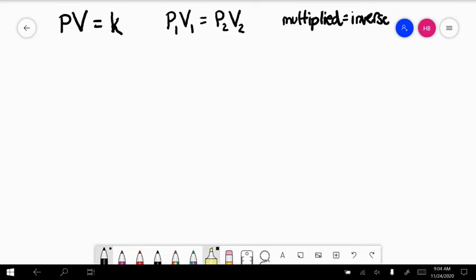That means that when you have a formula where they are multiplied by each other, as one goes up, the other one will respond and go down.